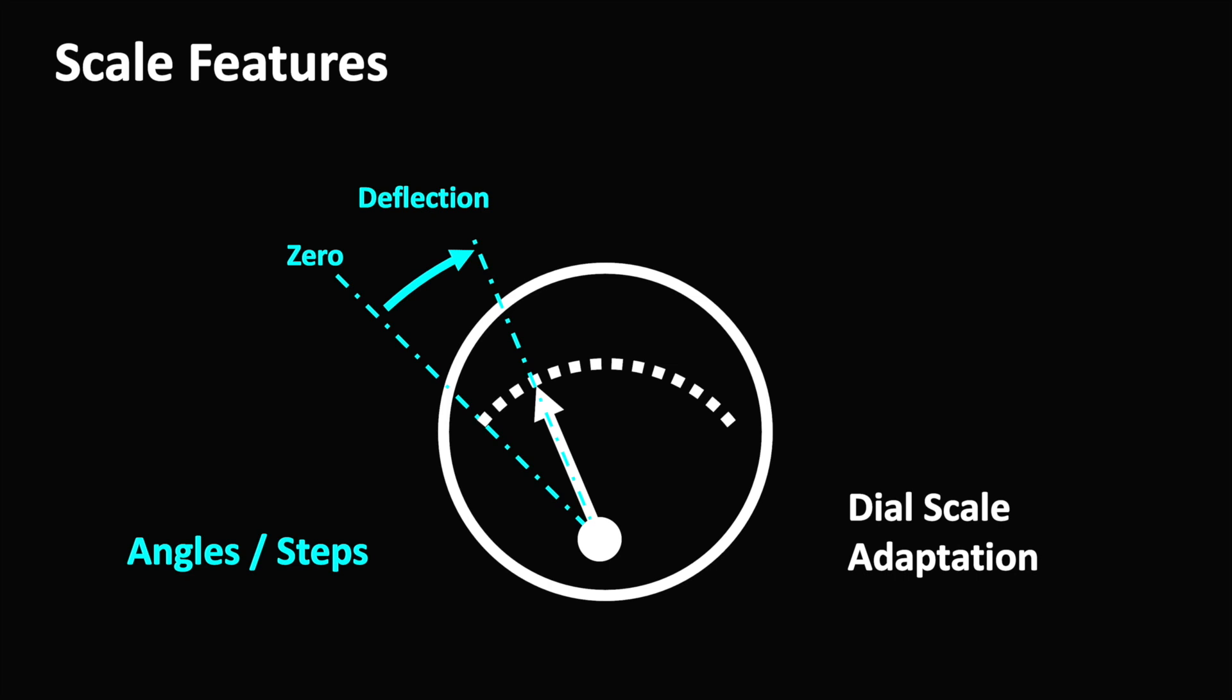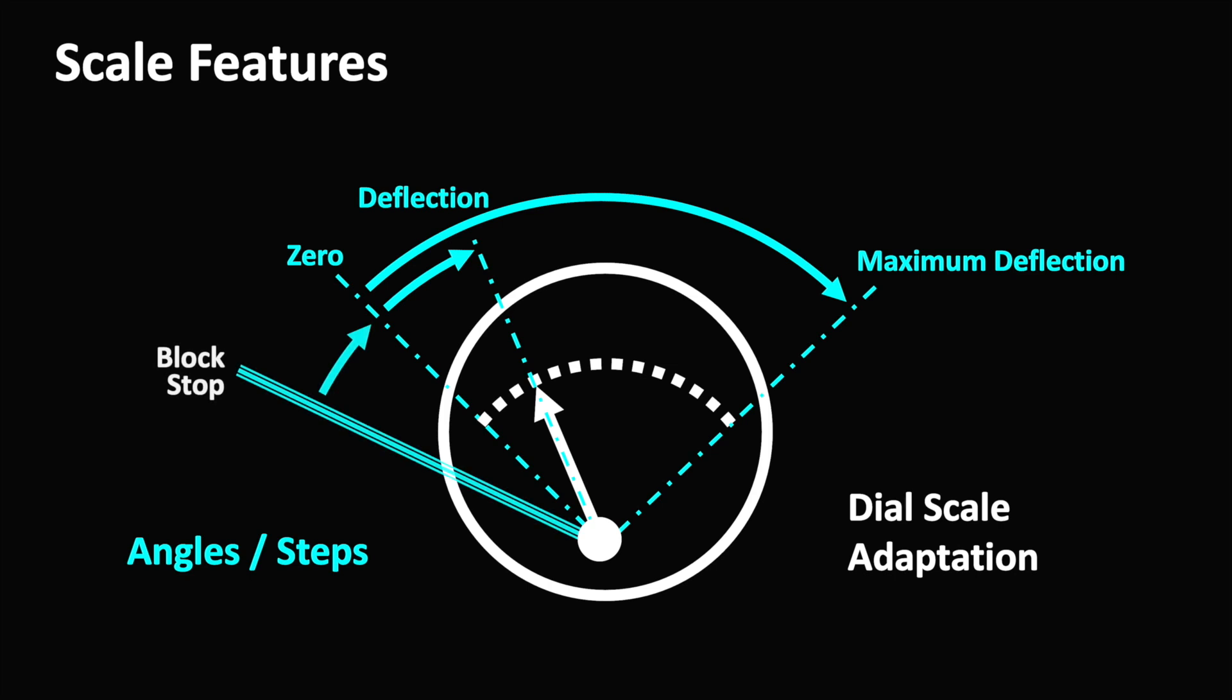If zero is the start of our scale, then maximum deflection is at the end of the scale. We are finding point zero by driving the stepper against an internal stop and then moving back a certain number of steps. In this way, we can vary the zero point.